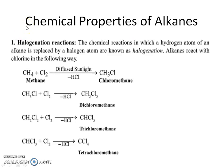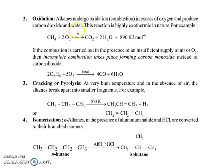Chemical properties of alkanes — halogenation reaction: this is also an example of a free radical substitution reaction. In the presence of ultraviolet or diffused light, alkanes react with halogens and produce haloalkanes.